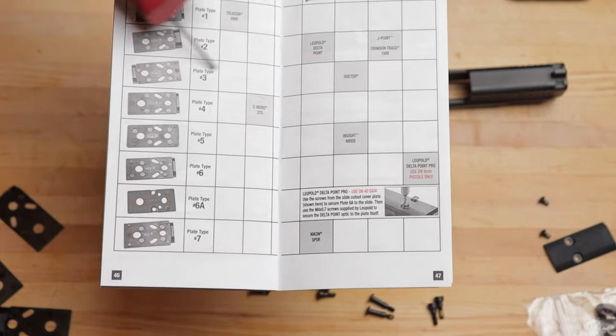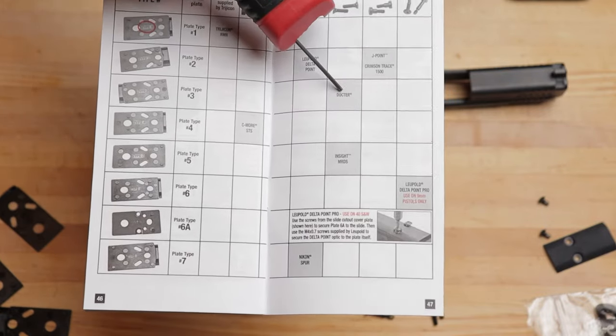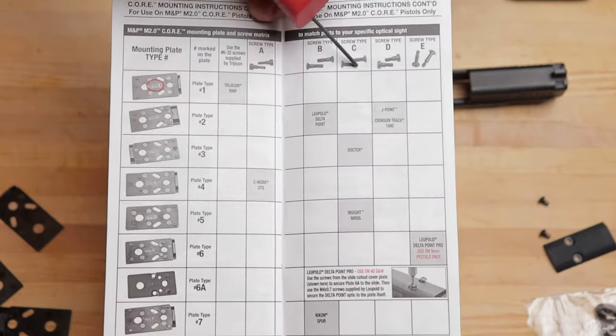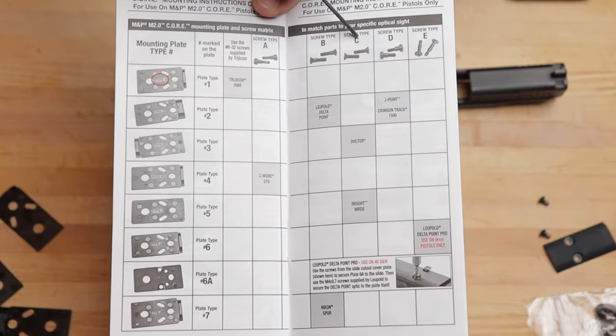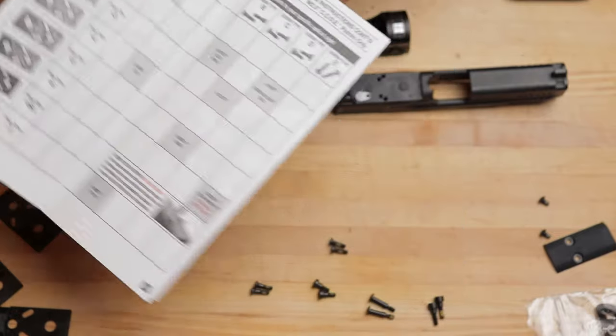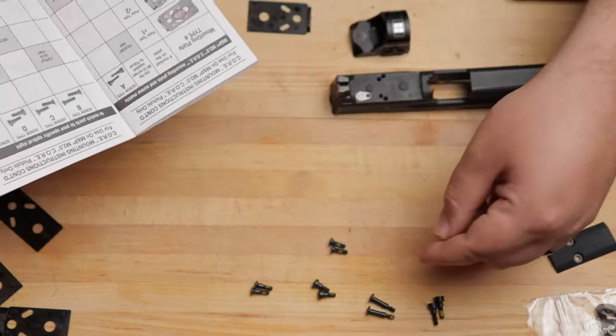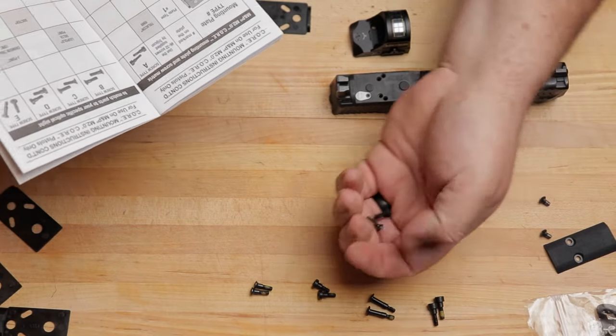So, if you have one of those, this is probably the plate you're gonna be using, and that's your footprint. Now, once you get to your footprint, you come up, and then it tells you what screws to use. In this case, it's screw type C, which you can do the whole match the pictures. And again, they're pretty easy to distinguish, so it would be these guys.